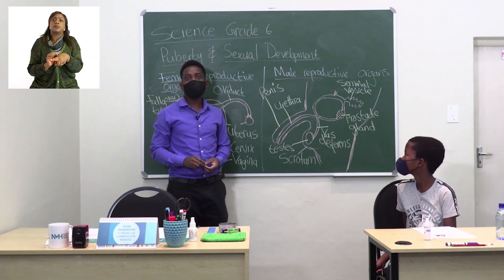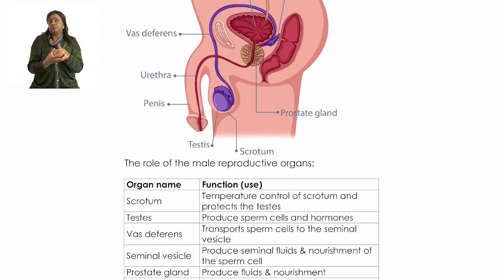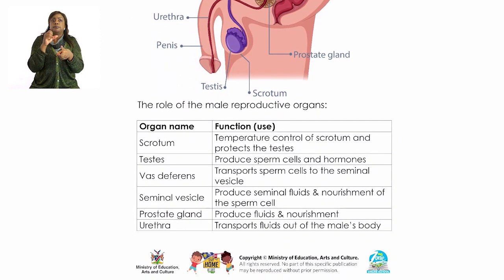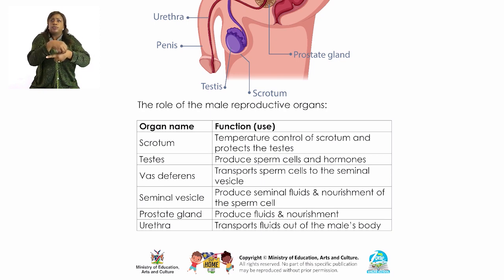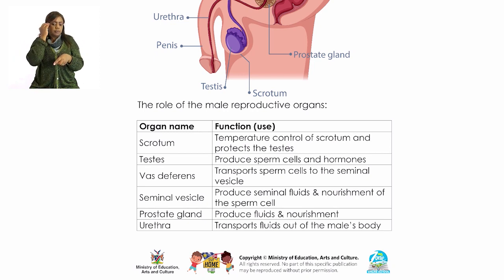Let us go back to page 20 and look at our diagram there. We start from the scrotum; inside the scrotum we have the testis, and from the testis a tube called the vas deferens connects to the seminal vesicle, then to the prostate gland, then the urethra, which is housed by the penis. Please do not get confused with the urinary bladder — it is not part of the reproductive system.